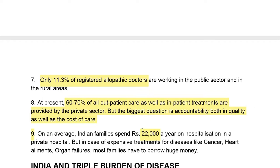This raises the biggest question of accountability — how are private sector hospitals held accountable? Another issue is that on average, 22,000 rupees is being spent by a normal family on health care. Imagine if a poor family faces diseases like cancer or organ failures — their life becomes extremely difficult. Indian families are spending 22,000 rupees on hospitalization alone, that too in private hospitals. This is the reality of Indian health care.